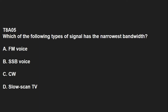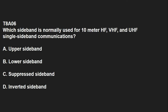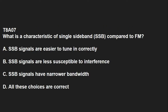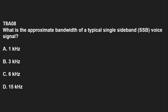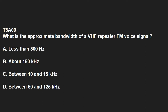T8A05: Which of the following types of signal has the narrowest bandwidth? That answer is C, CW, also known as Morse code. T8A06: Which sideband is normally used for 10 meter HF, VHF and UHF single sideband communications? That answer is A, upper sideband. T8A07: What is a characteristic of single sideband compared to FM? That is C, SSB signals have a narrower bandwidth. T8A08: What is the approximate bandwidth of a typical single sideband voice signal? That answer is B, 3 kilohertz. T8A09: What is the approximate bandwidth of a VHF repeater FM voice signal? That answer is C, between 10 and 15 kilohertz.